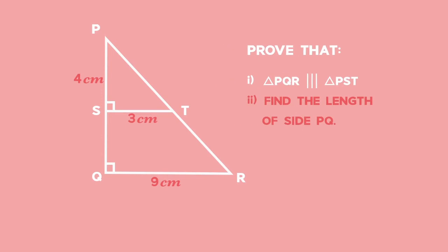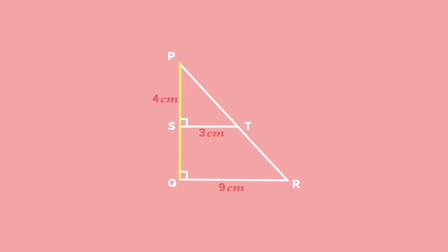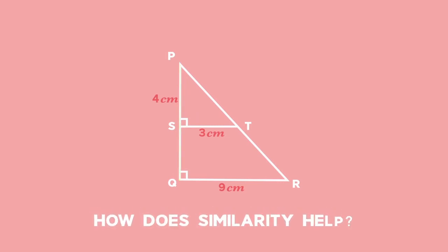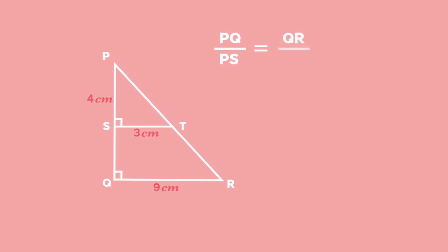The second part of the question usually uses information from the first part — take it as a hint. We must find the length of side PQ. Similarity means the sides of the triangles are in proportion, so the ratio of PQ to PS equals the ratio of QR to ST. Substituting the known lengths: PQ divided by 4 equals 9 divided by 3, which simplifies to PQ divided by 4 equals 3, so PQ equals 12 cm.